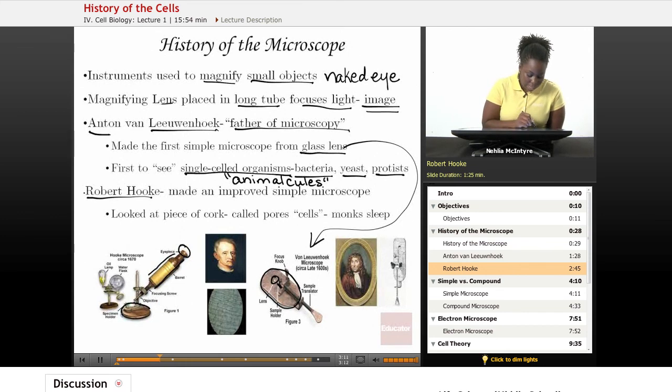And he also had a stage or a plate where a specimen was held. And his microscope had an objective, which had a particular magnification on it, which helped him to see very small objects.